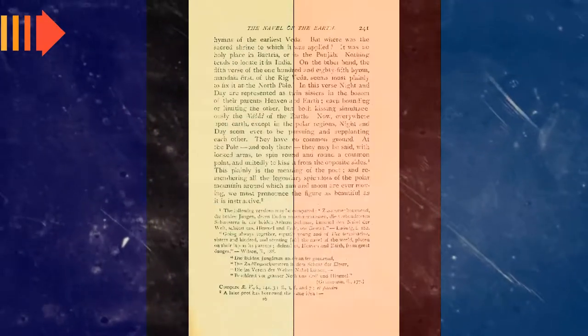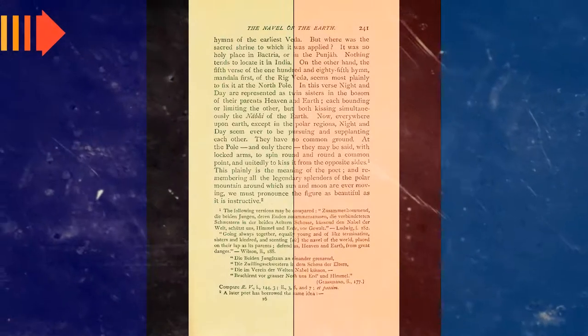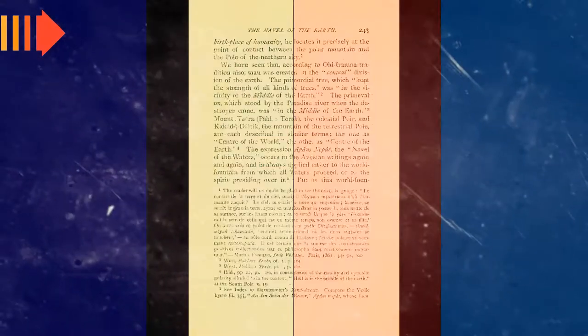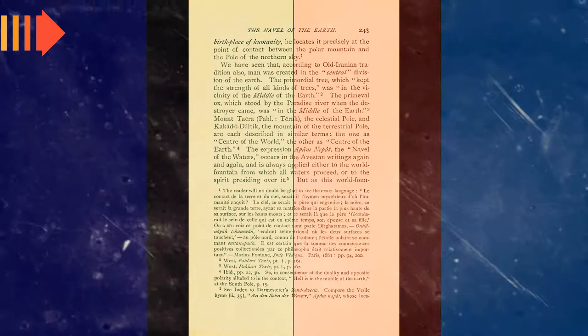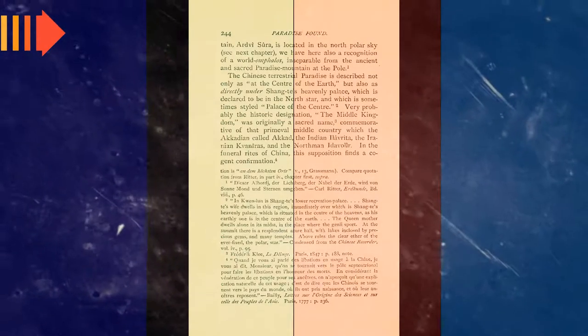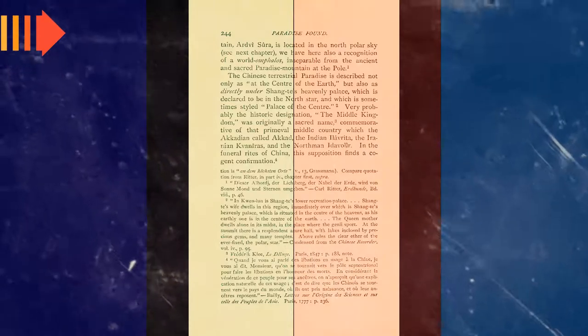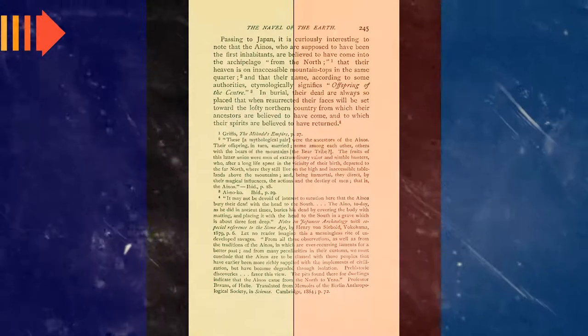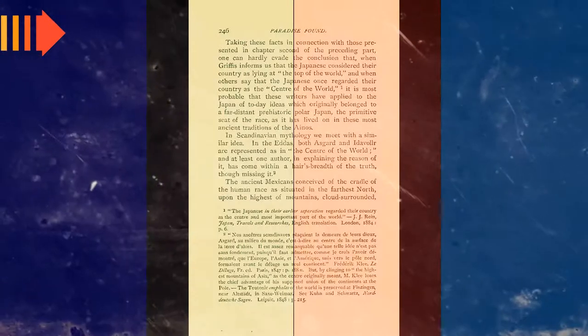And the island of Atalante, which was greater than Africa and Asia, as Plato says in the Timaeus, in one day and night was overwhelmed beneath the sea in consequence of an extraordinary earthquake and inundation and suddenly disappeared, becoming sea, not indeed navigable, but full of gulfs and eddies. The theologian Joseph Barber Lightfoot, Apostolic Fathers, 1885, noted on this passage: Clement may possibly be referring to some known, but hardly accessible land, lying without the Pillars of Hercules.